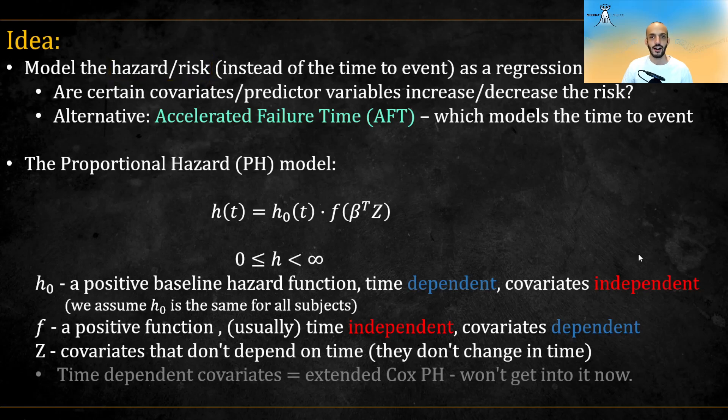And so a Cox model will answer, does a certain covariate or predictor increase or decrease the risk of an event? An alternative to Cox models is accelerated failure time or AFT models, which model the actual time to event, but I will discuss this in a future video.